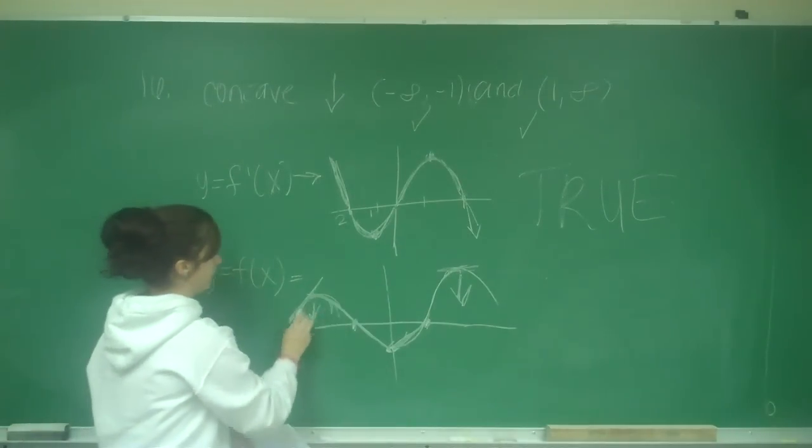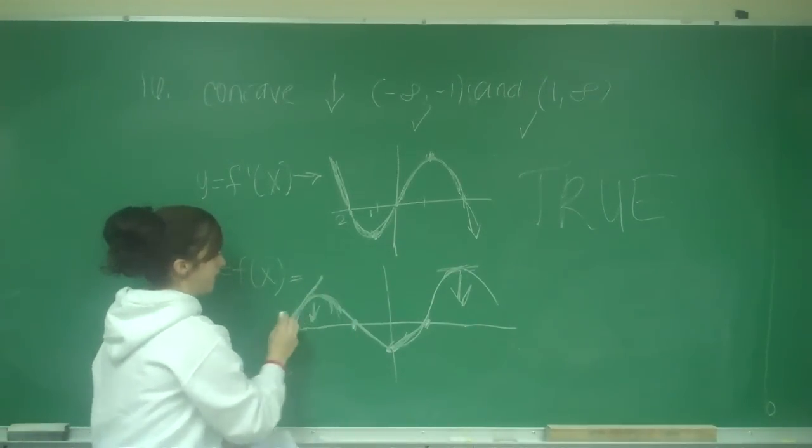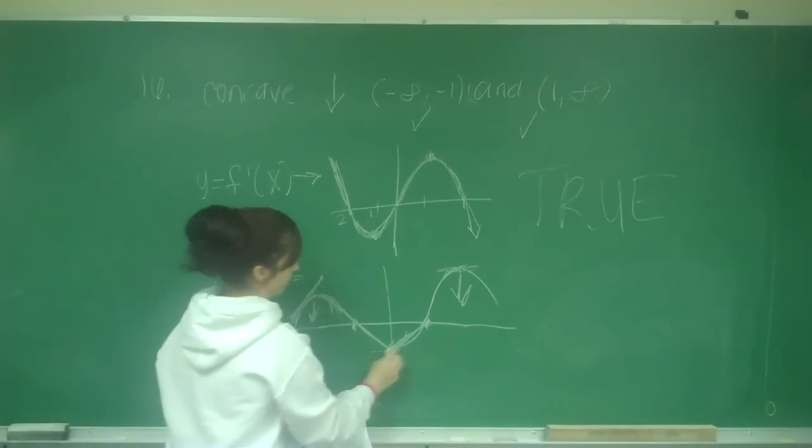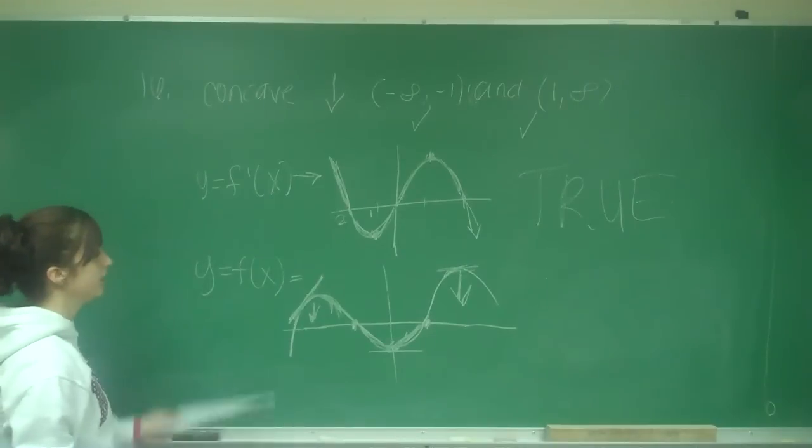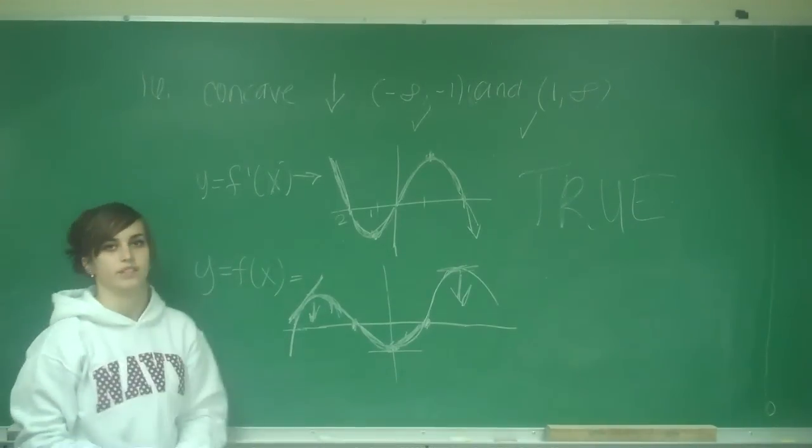Remember, concave down is when my parabola is going down, and I can draw a line on top of it. Concave up would be this bottom one where it's coming up. So this one is true for number 16.